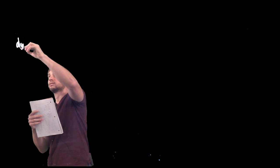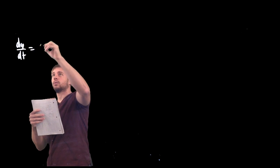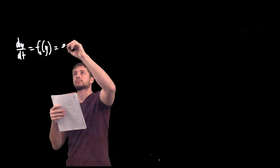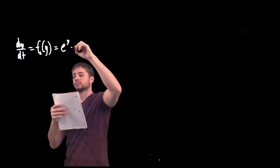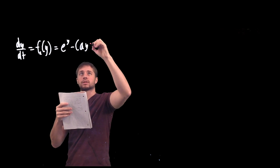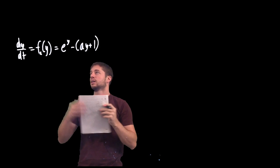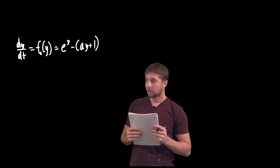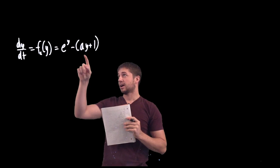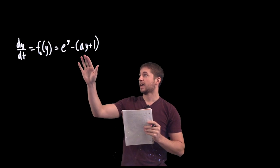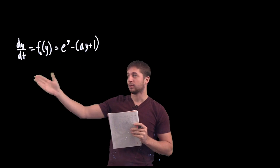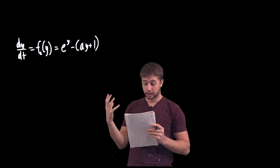Suppose we have a one-parameter family given by this formula. What we want to do is find the bifurcation values, which are the values of a for which the number or type of equilibrium points of this differential equation changes suddenly.